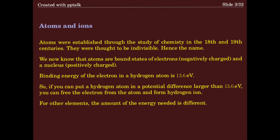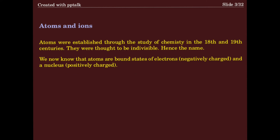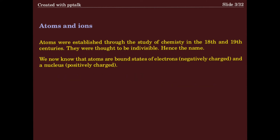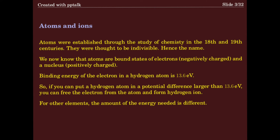For example, the binding energy of the electron in a hydrogen atom is 13.6 electron volts. So if you can put a hydrogen atom in a potential difference larger than 13.6 volts, you can free the electron from the atom and form a hydrogen ion — you can strip the atom of the electron. For other elements this is also true, but the amount of energy needed will be different, and depending on the element, you will get different numbers of electrons.